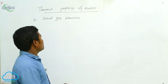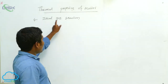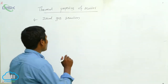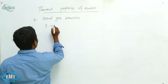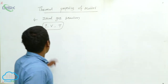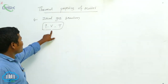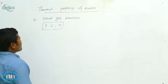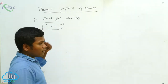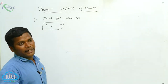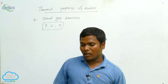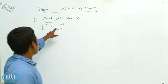Now we are going to derive the ideal gas equation. Before deriving it, you should know three parameters: first is pressure, next is volume, and third is temperature. P means pressure, V means volume, and T means temperature. Pressure is force divided by area. To measure volume, we multiply length into breadth into height.